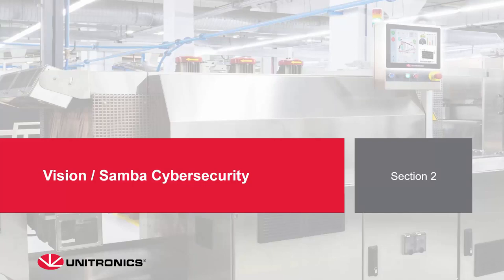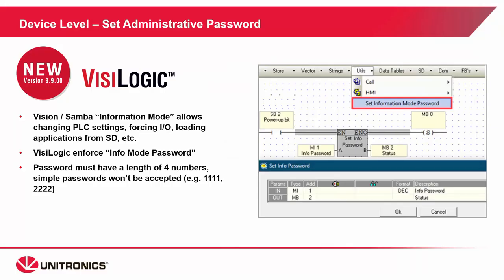Next, we'll talk about Vision and Samba cybersecurity. A lot of these features were added in the new version 9.9.00, available on the website. First, Info Mode access. Info Mode is a backdoor set of screens on any Samba or Vision product. It allows access to things like PLC settings, IP addressing, ports, serial settings. You can force I/O, change tags or operands, load applications from an SD card, and more. In the newest version of Visologic, it now enforces an Info Mode password — it's a four-number password, and simple passwords like 1111 will not be accepted.